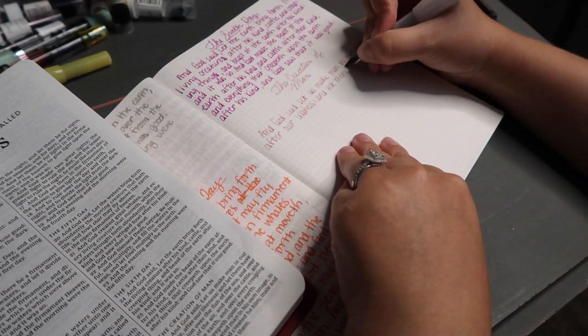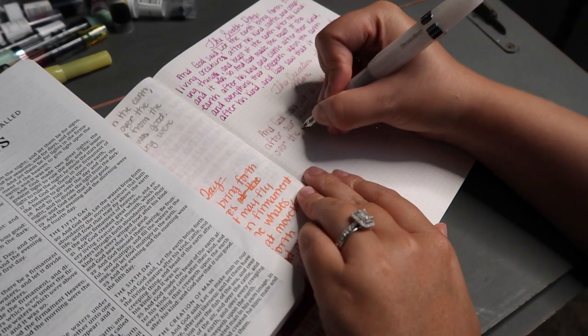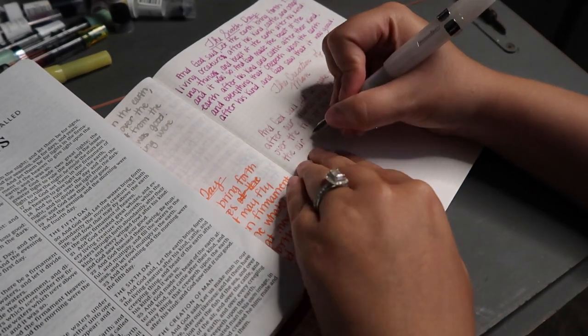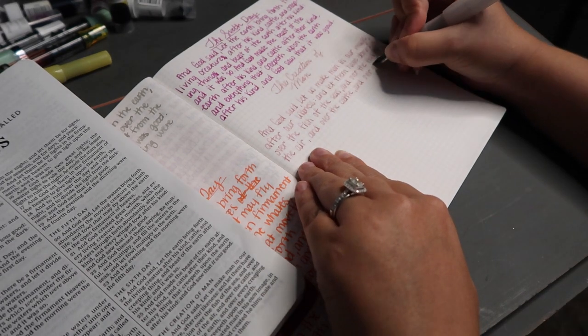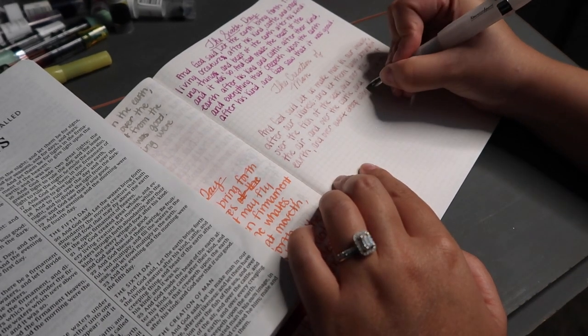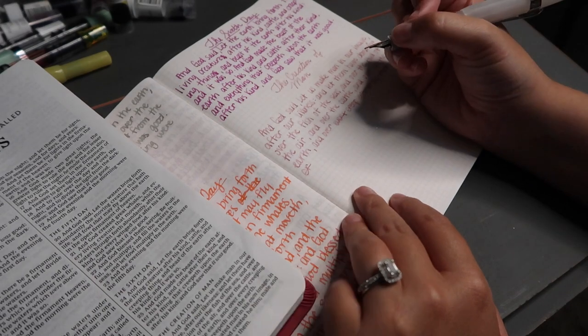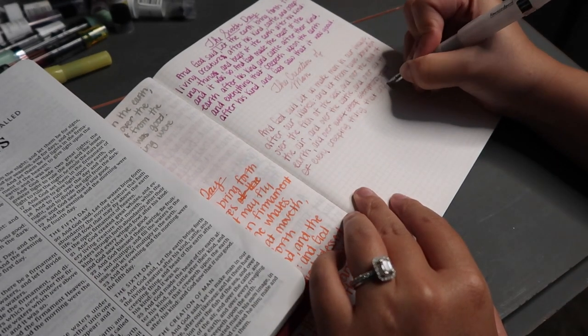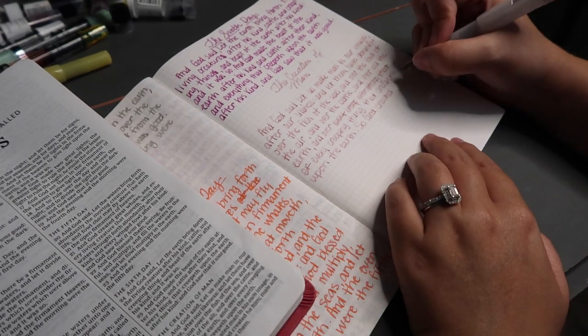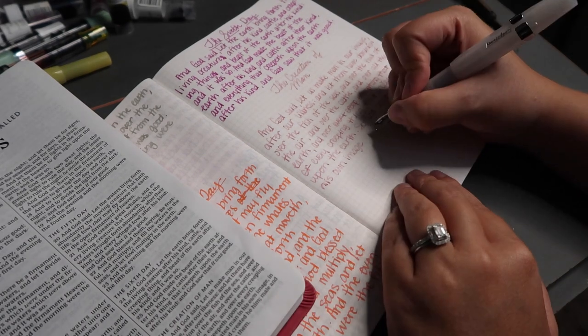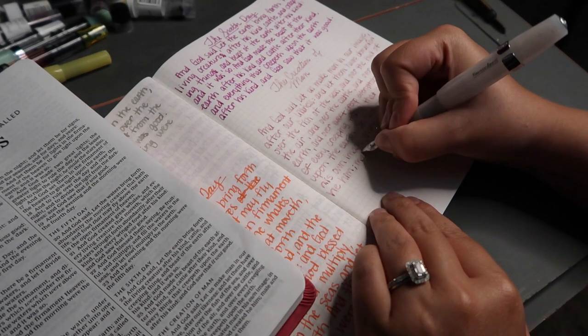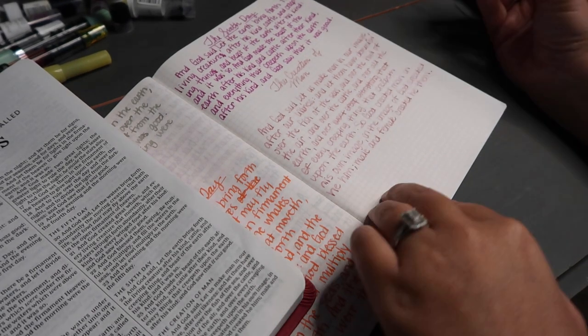I want to pause right here and talk about what it means when God said, Let us make man in our image. God is three in one: Father, Son, Holy Spirit. And he makes us the same way. We are spirit, soul, and body. Our likeness is in his identity of Father, Son, Holy Spirit. So let's continue.